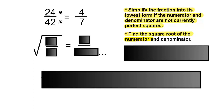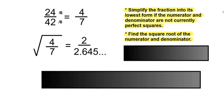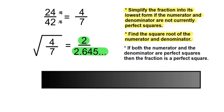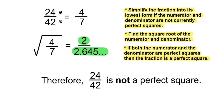Find the square root of the numerator and denominator. The square root of 4 over 7: the square root of 4 is 2, and the square root of 7 will give you 2.645 and so on. If both the numerator and denominator are perfect squares, then the fraction is a perfect square. The numerator is a perfect square, but the denominator is not a perfect square; therefore, this is not a perfect square. So 24 over 42 is not a perfect square.